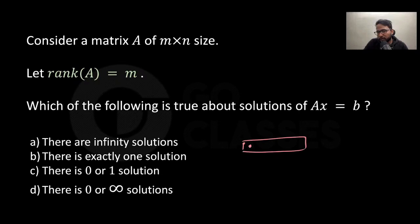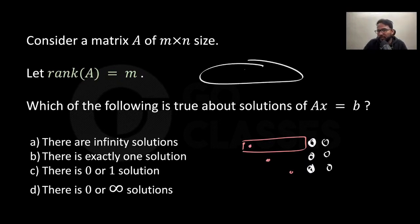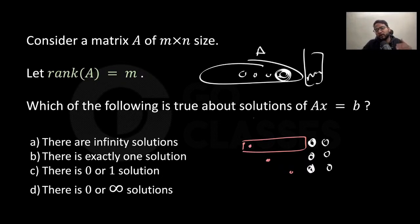Every row has a pivot means there are no zero rows. Since there are no zero rows, the case of a zero row with a non-zero b entry cannot occur. So the solution always exists when every row has a pivot.